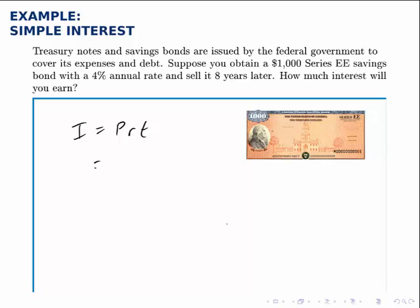So putting all the pieces together, the principal is $1,000, the interest rate is 4%, but again we write that as 0.04, and the number of years is 8.